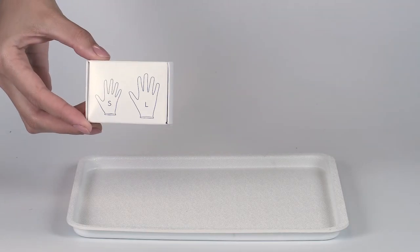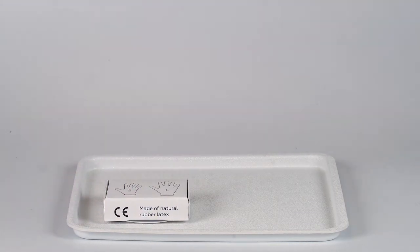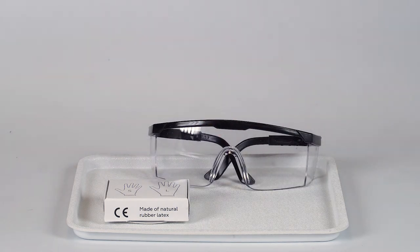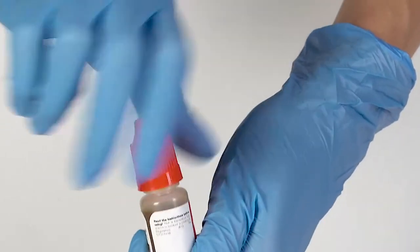Perform this experiment on the plastic tray to contain any possible spills. Don't forget to put on protective gloves and goggles before doing the experiment. To open a bottle containing a reagent, push the cap down and turn it.